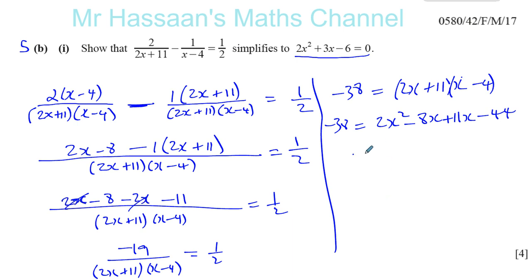Okay, so now we'll bring everything to one side. We're going to have 2x squared. Minus, that's going to be minus, sorry, it's going to be plus 3x. Minus 8x plus 11x plus 3x. Have a minus 44 plus 38.